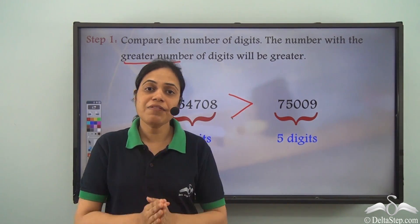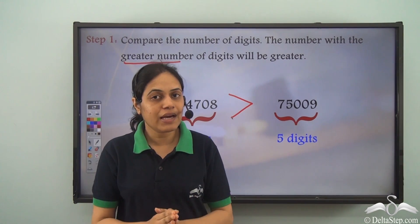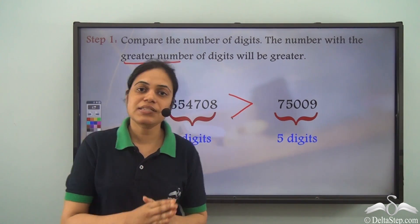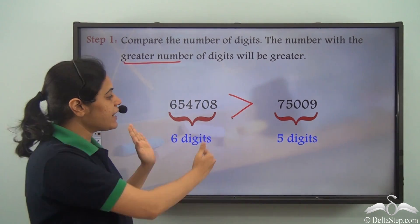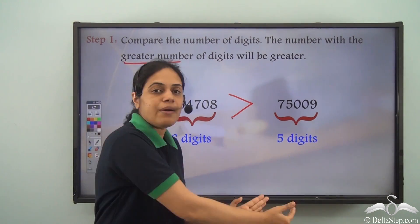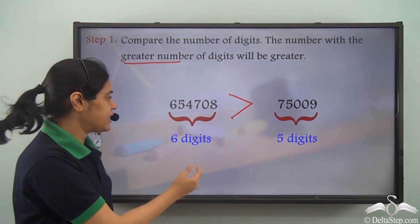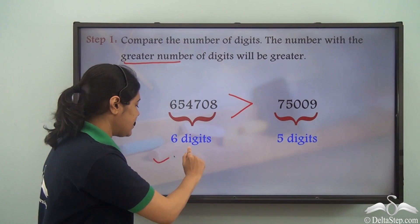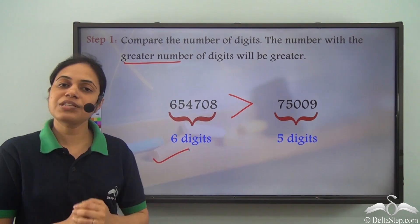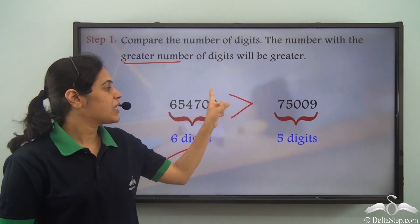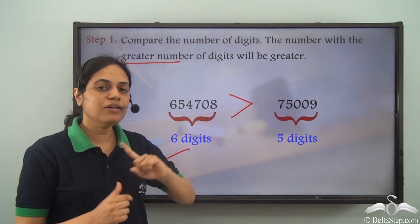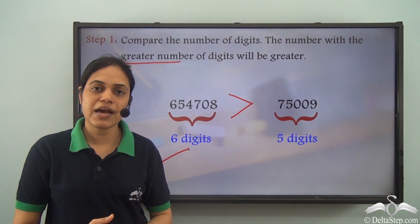So even without looking at the actual digits, just by counting the number of digits, I can say that this number is greater, and this is the greater-than sign.